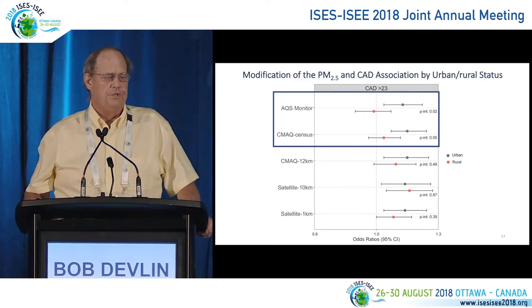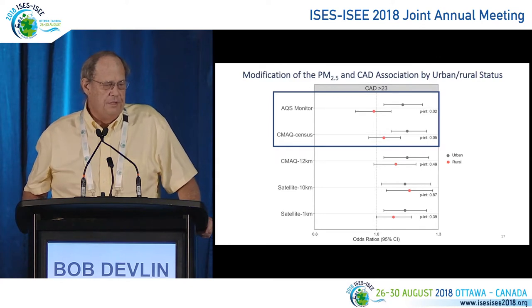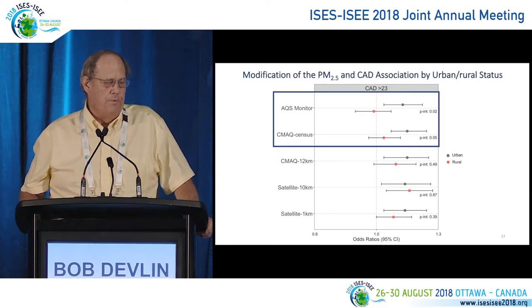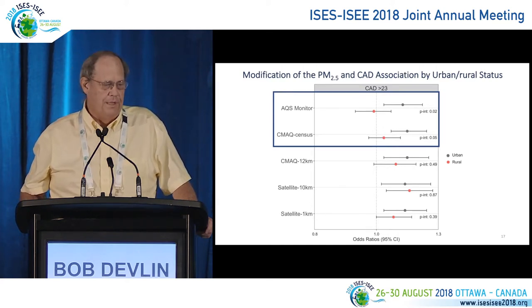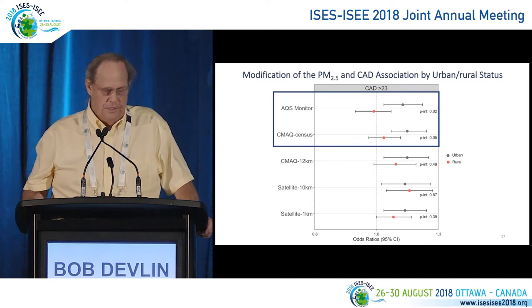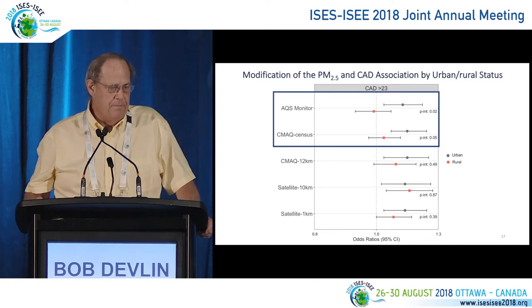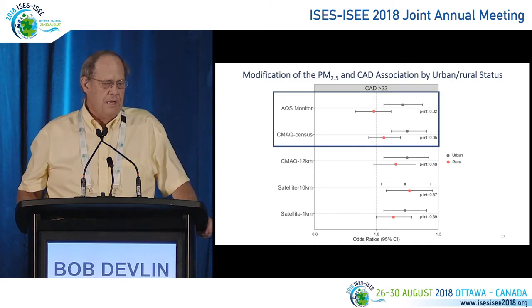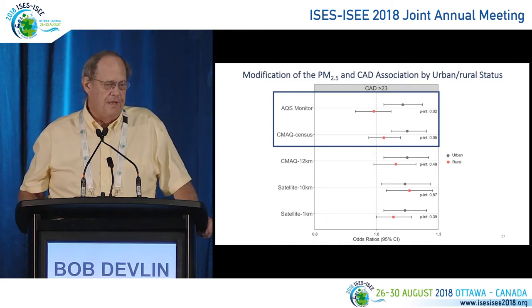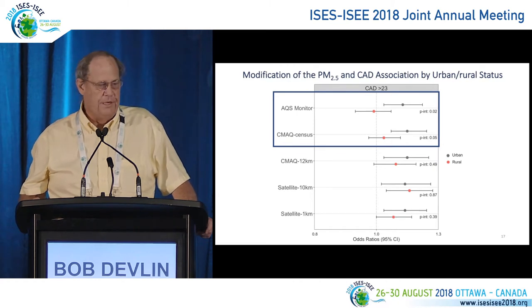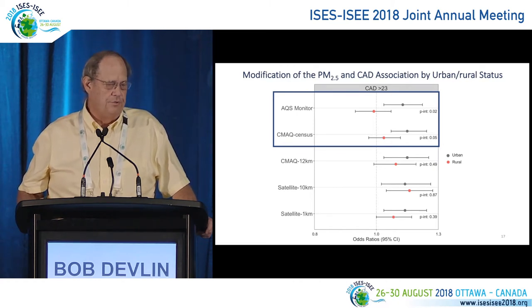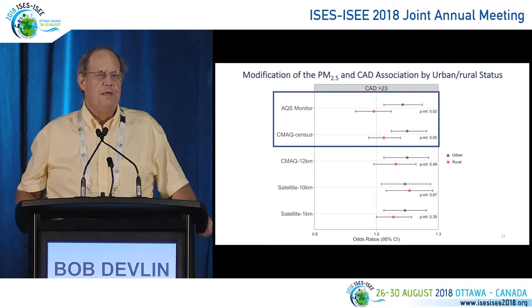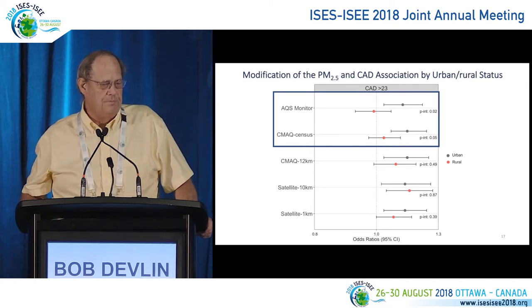One place we did see differences was in the urban-rural comparison. With the air quality monitor and the census tract-based CMAQ model, we did not see significant effects in rural locations — and census tracts can get very large in rural areas. However, the models with higher spatial resolution — the 12 kilometer CMAQ and both satellite models — were able to show effects in both urban and rural areas. So it clearly does make a difference what resolution you use when looking at large populations spanning both rural and urban locations.